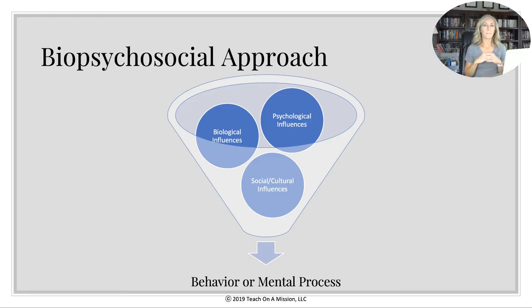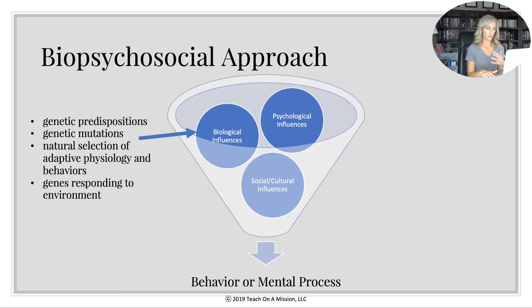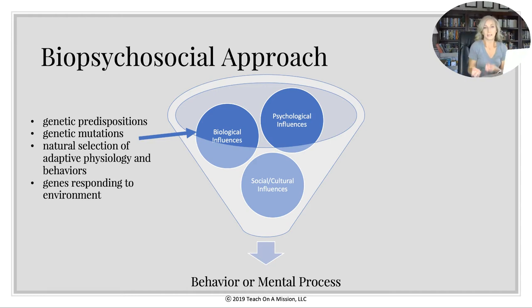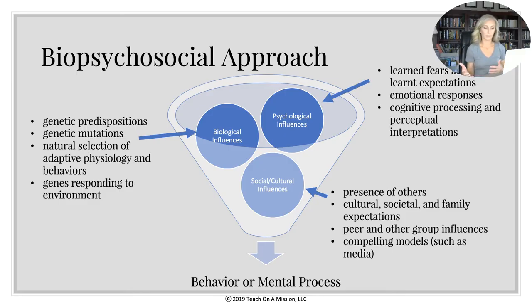It's important to understand the biopsychosocial approach in psychology — how all three of these things go into a funnel and out comes our behavior or mental process. That approach is a well-rounded one because you're considering psychological, biological, and social-cultural influences. Biological means genetic predisposition, natural selection of adaptive physiology and behaviors, and genes. Psychological includes learned fears and expectations, emotional and cognitive processes. Social-cultural includes the presence of other people, cultural and family expectations, peer and group influences, and compelling models especially through media.